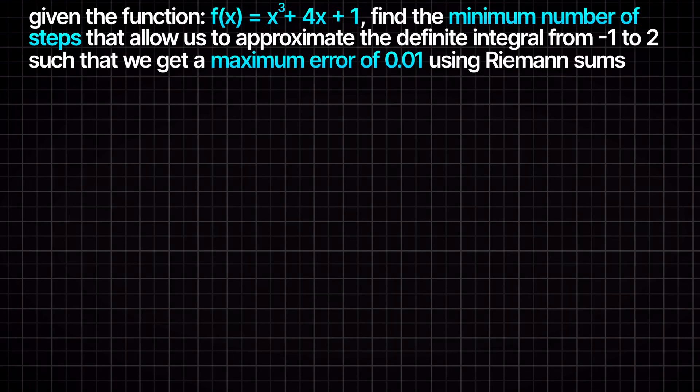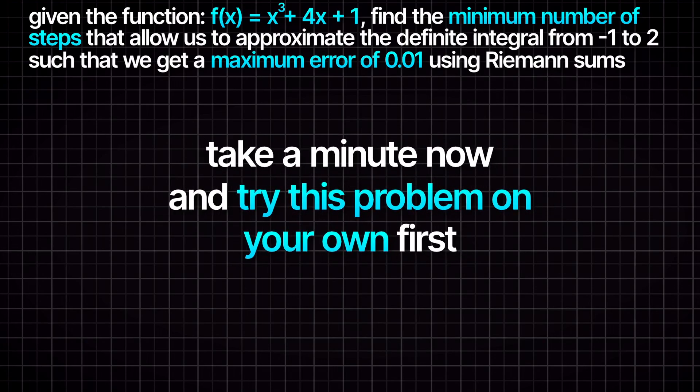We are asked to find the minimum number of subintervals that allow us to approximate the definite integral from -1 to 2 using Riemann sums such that we achieve a maximum error of 0.01. Take a minute now and try to solve this problem on your own before we go through the solution together.